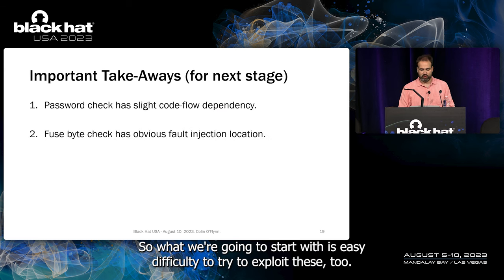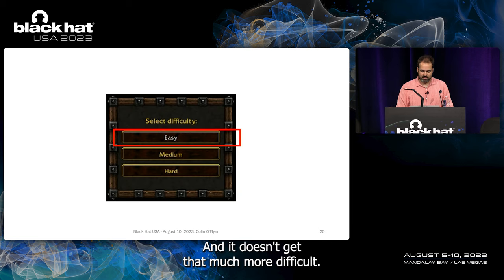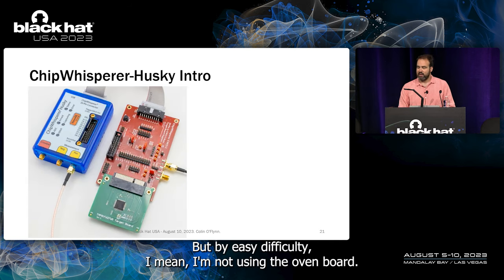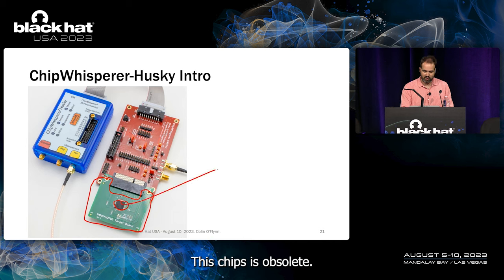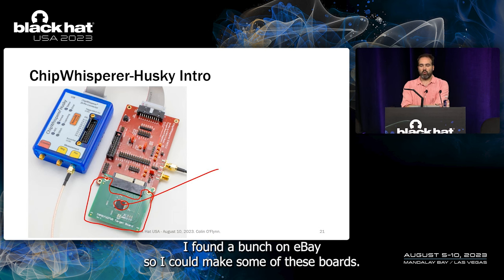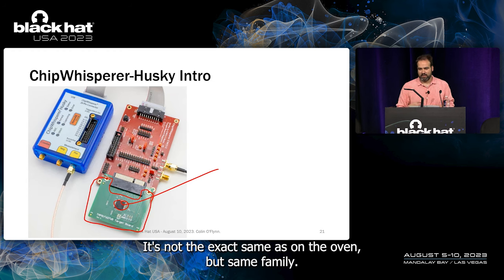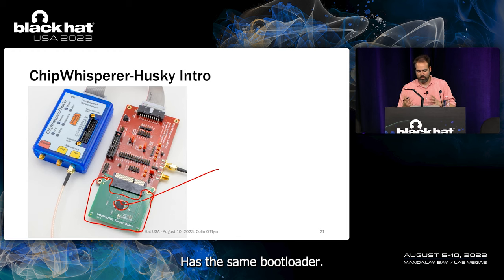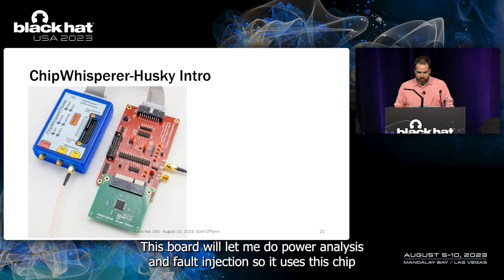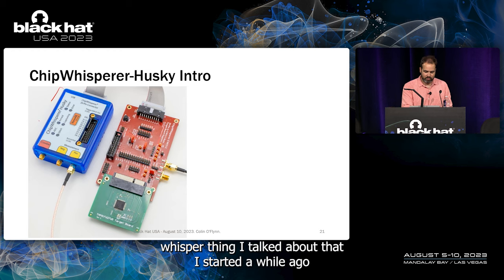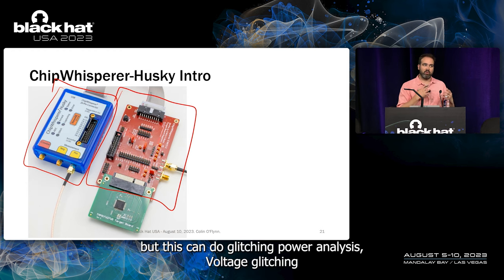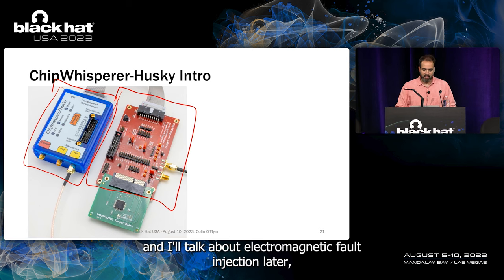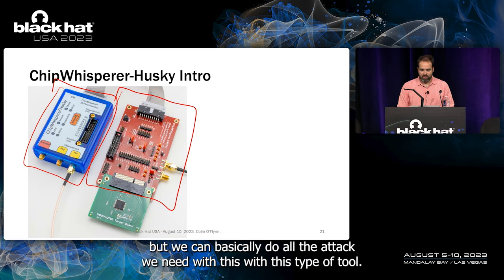I'm starting at easy difficulty — not using the actual oven board, but a little target board I made with this chip. It's obsolete so I found a bunch on eBay. It's not exactly the same as on the oven but the same family, so we expect similar behavior and it has the same bootloader. This board lets me do power analysis and fault injection using ChipWhisperer — specifically the newer ChipWhisperer Husky — which can do power analysis, voltage glitching, and electromagnetic fault injection.